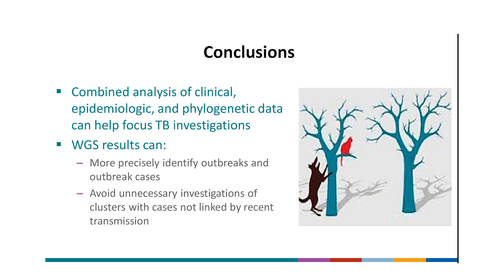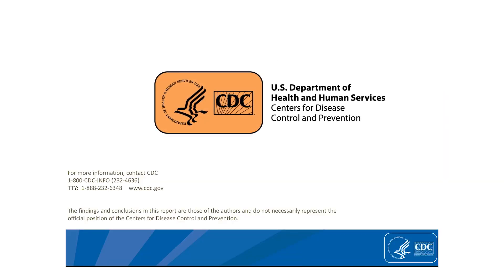I hope that we've helped describe how the combined analysis of clinical epi and phylogenetic data can help focus TB investigations. Sequencing results can help us make sure we're barking up the right tree by enabling us to more precisely identify outbreaks and outbreak cases. Importantly, these data can also help us avoid unnecessary investigations of clusters with cases not linked by recent transmission. Thank you.